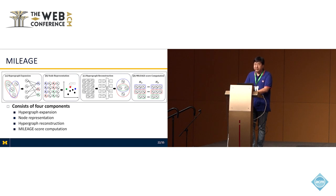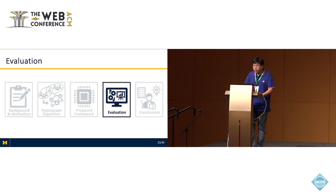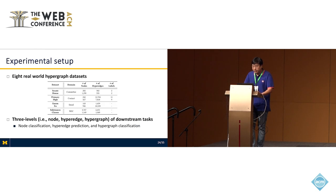For more details, please refer to the paper. We have conducted extensive experiments using eight real-world hypergraph datasets and three levels of downstream tasks: node classification, hyperedge prediction, and hypergraph classification.